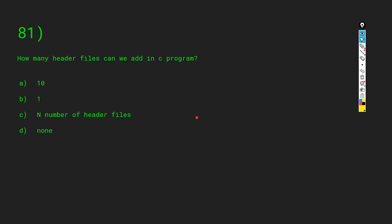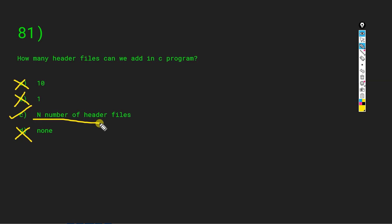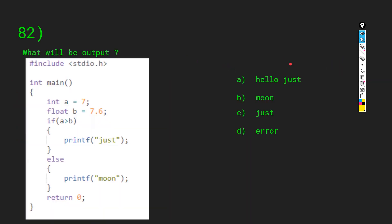This is the last video of the series where we complete 100 C MCQs. How many header files can we add in a C program? The options are 10, 1, and N number of header files, or none. None is not the answer, 1 is not the answer, 10 is also not the answer. The answer is N — we can include multiple header files in a C program and they can repeat.